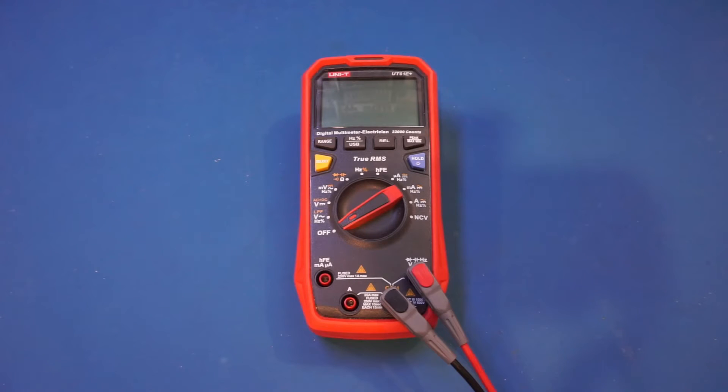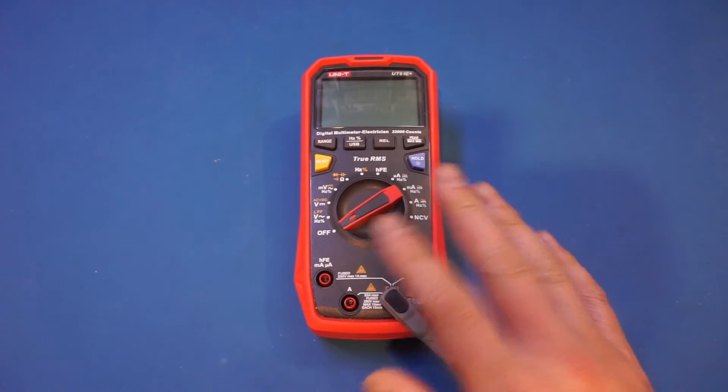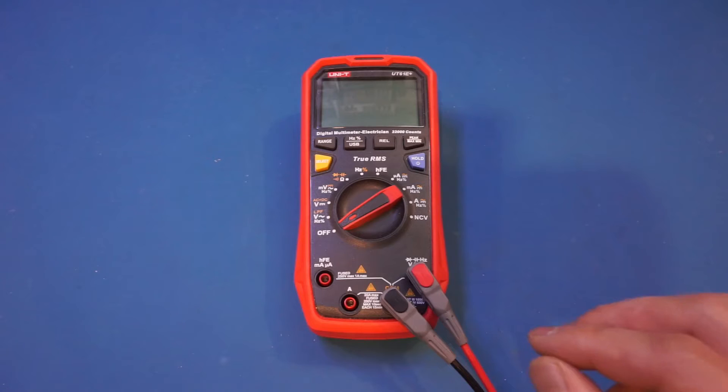Of course, the range switch is really just icing on the cake, and it doesn't really affect the functionality of the meter, but it is something you will notice immediately. For the UT61E+, I have not encountered any reliability issue as a result of the range switch design over the long term.